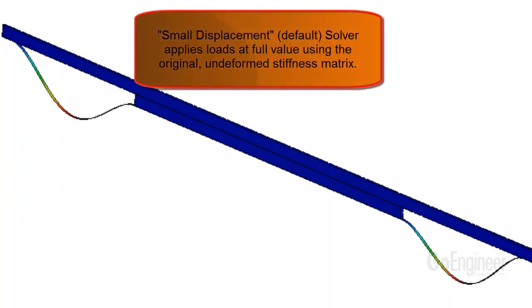The small displacement solver actually applies all loads, including gravity, to full value using the original undeformed structure stiffness matrix, which won't work for this case.